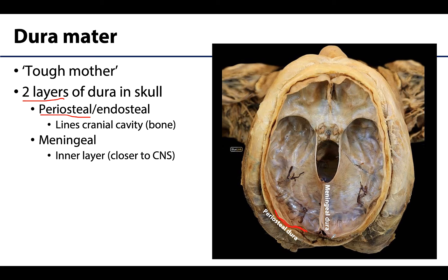The periosteal and meningeal layers are most often closely adhered to one another except for in a few specific but important areas. You can see the meningeal dura reflecting away from the periosteal dura right here, creating a space which will actually be a dural venous sinus during life, and it can continue to create these areas called dural partitions — the specializations of meningeal dura.